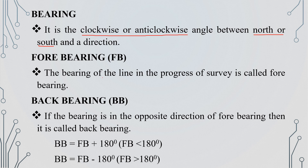The bearing of a line in the progress of a survey is called fore bearing. The next one is back bearing. If the bearing is in the opposite direction of a fore bearing, then it is called back bearing. The back bearing is the opposite direction of a fore bearing.